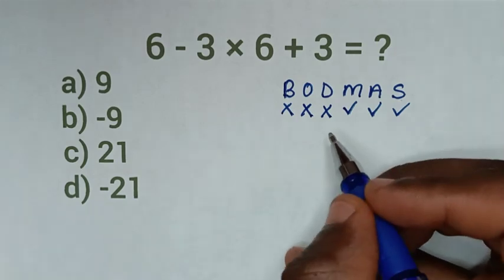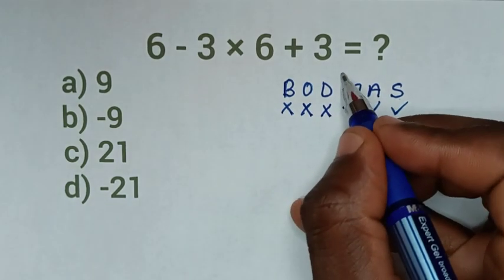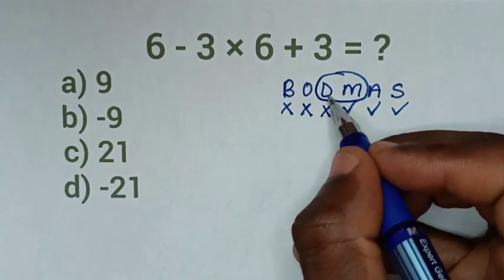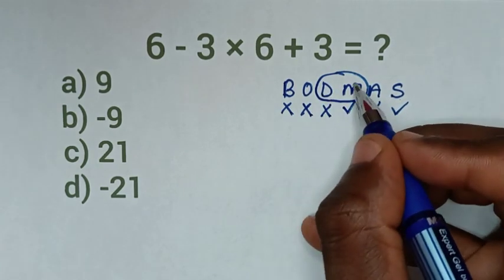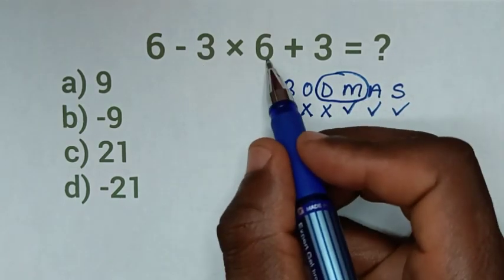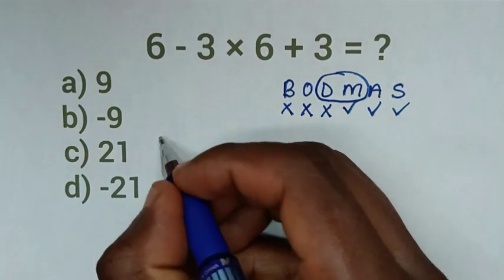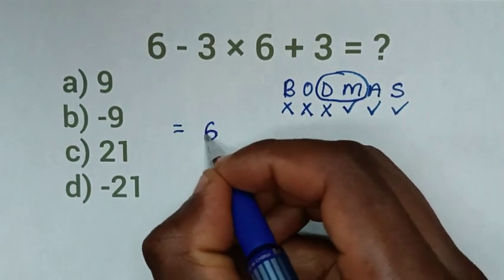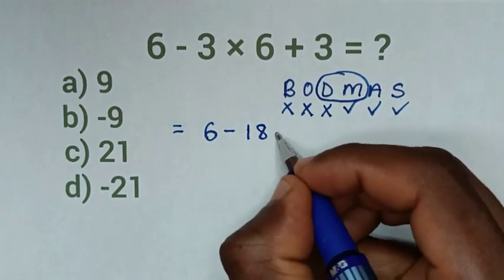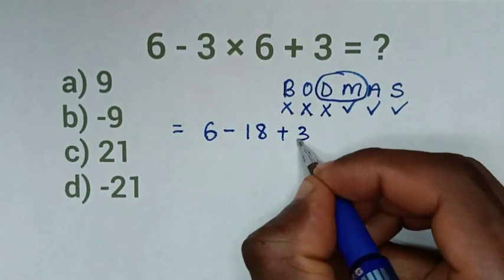Then from here, division and multiplication operations we'll solve together, but we don't have division. So we'll solve for multiplication only, which is 3 times 6. So it will be equal to 6 minus 3 times 6 is 18, then plus this 3.